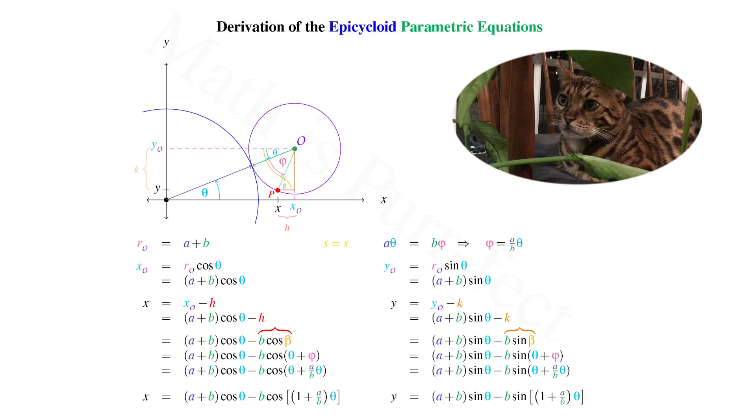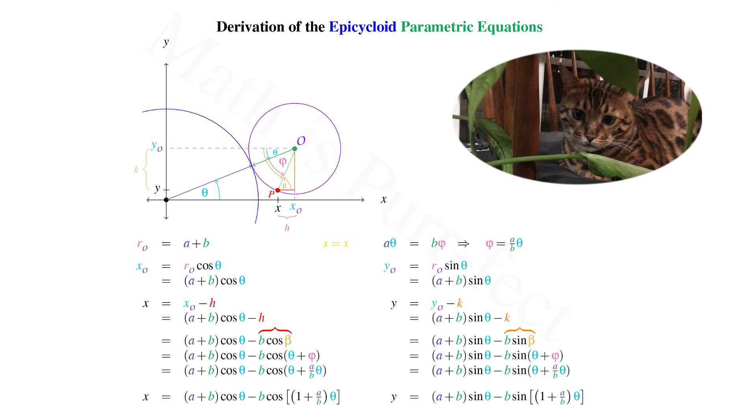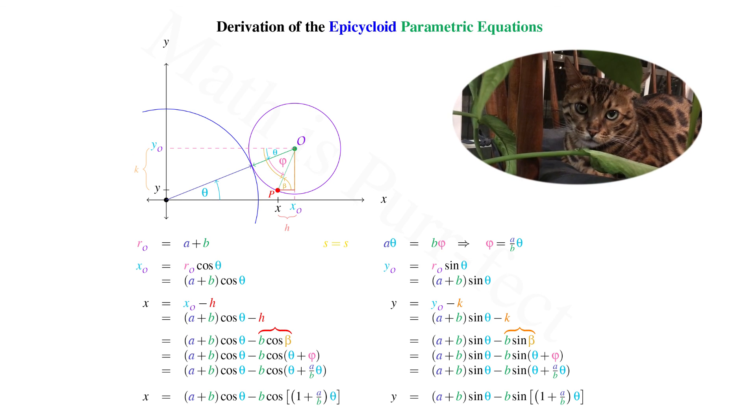Y equals A plus B sine theta, minus B times sine of the quantity, 1 plus A over B times theta. Thanks for playing, and I'll see you next time.